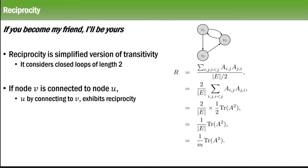Then how to calculate the reciprocity? There is a mathematical derivation for reciprocity. R stands for reciprocity. It is a summation of i,j where i is less than j, A_ij multiplied by A_ji, divided by the number of edges divided by 2, or the cardinality of E, the set of edges in a graph. So I can rewrite it as 2 by cardinality of E, summation of i,j where i is less than j, A_ij into A_ji.